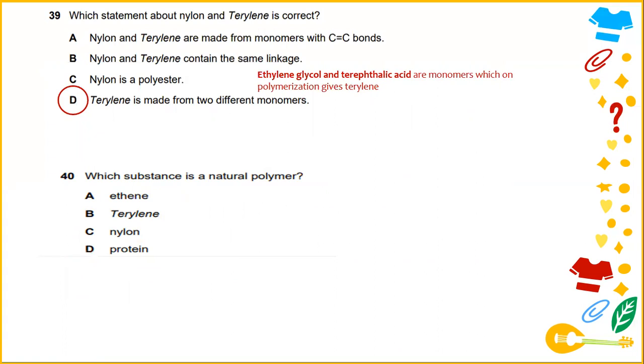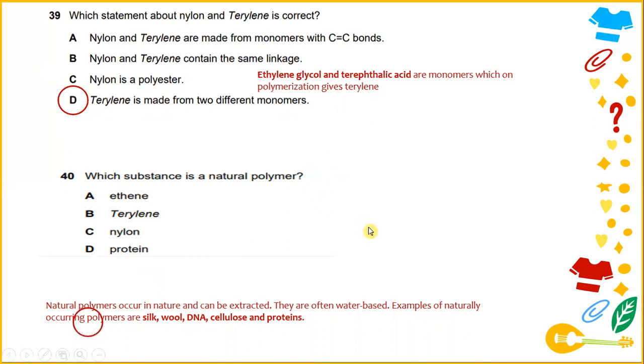Which substance is a natural polymer? Natural polymers occur in nature and can be extracted. They are often water-based. Examples include all naturally occurring polymers such as silk, wool, DNA, cellulose, and protein. The answer for 40 is D.